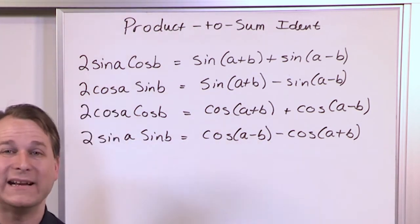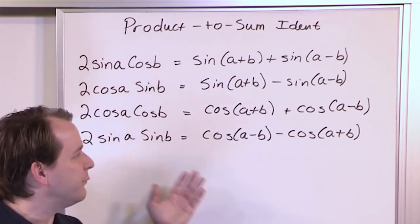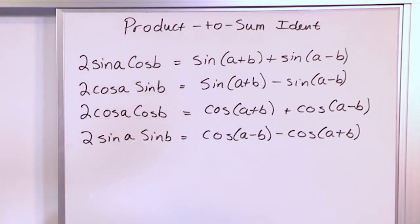In fact, some books write it like that. They put the 1 half on the other side. It just depends on what book you have. I'm choosing to write it like this because I think it's easier than looking at a bunch of fractions. But in our case, since we don't have a 2 in front, we need to plug in for this part of the identity. So we'll just move the 2 over there and make it 1 half.